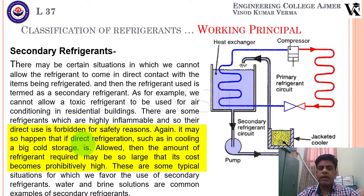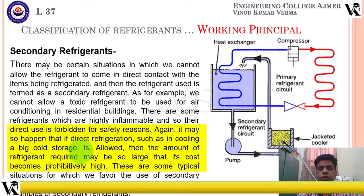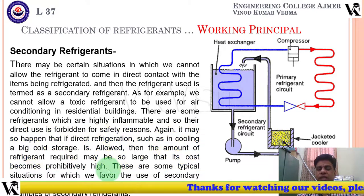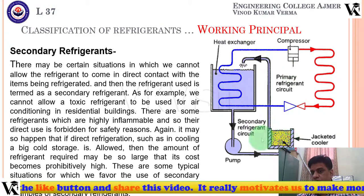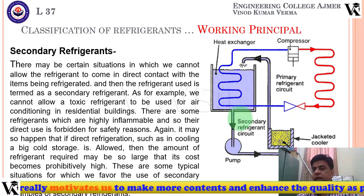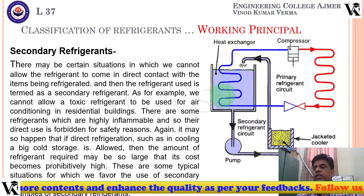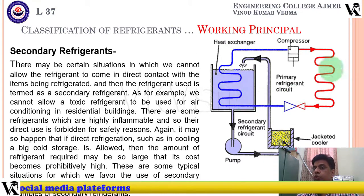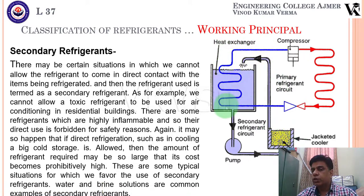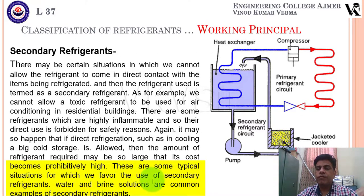Another reason for using secondary refrigerants: if direct refrigeration in a large cold storage requires a very large quantity of refrigerant, its cost may become prohibitively high. In such a case, we can use a highly effective but toxic refrigerant in the primary circuit in smaller quantities, and use a secondary refrigerant for the actual cooling zone. These are typical situations that favor the use of secondary refrigerants.